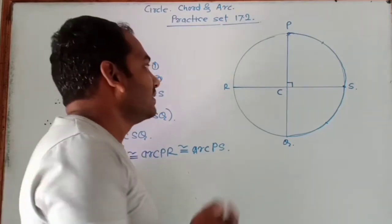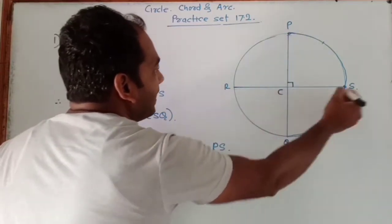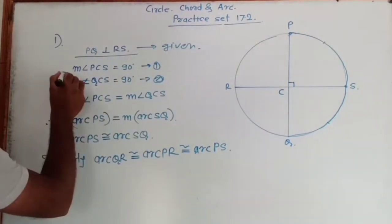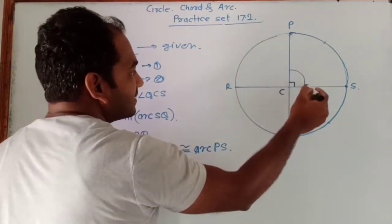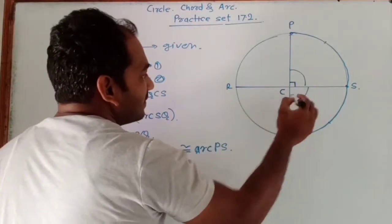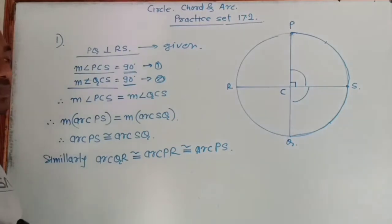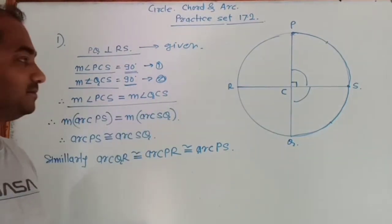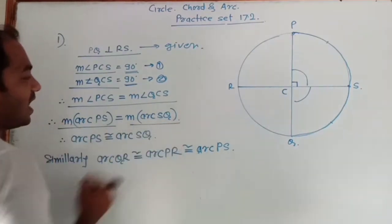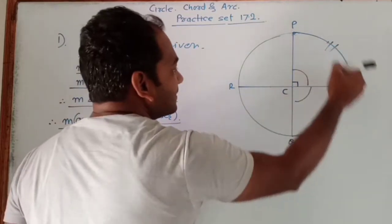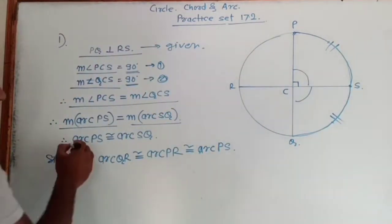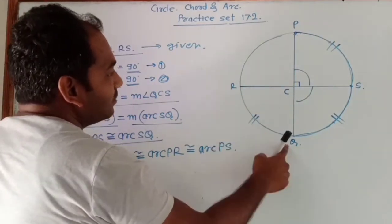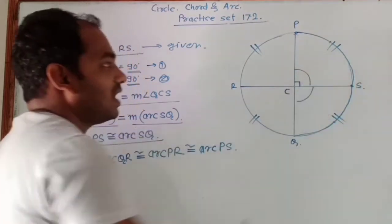Since diameter PQ and diameter SR are perpendicular to each other, measure of angle PCS and measure of angle QCS are both 90 degrees. Therefore, measure of angle PCS equals measure of angle QCS, and therefore the corresponding arcs PS and SQ have the same measure — meaning they are congruent to each other. Similarly, arc RQ and arc RP are also congruent to arc PS.